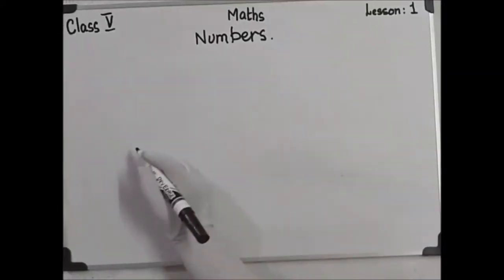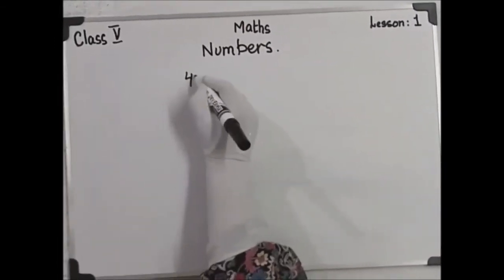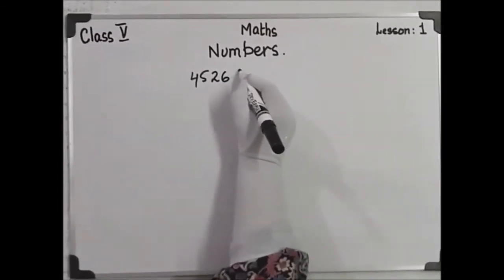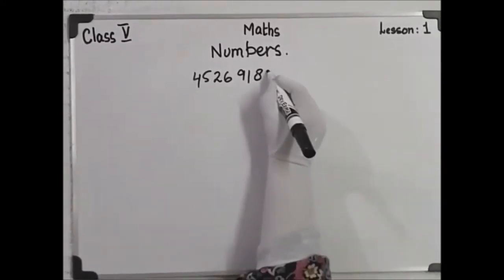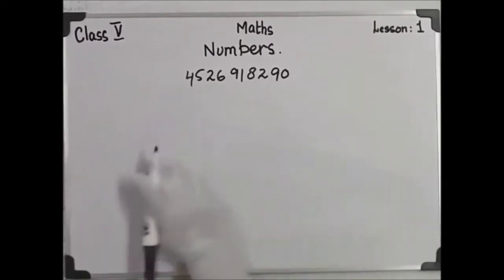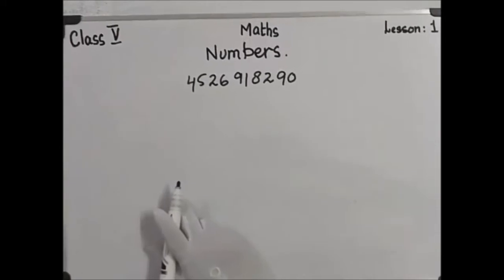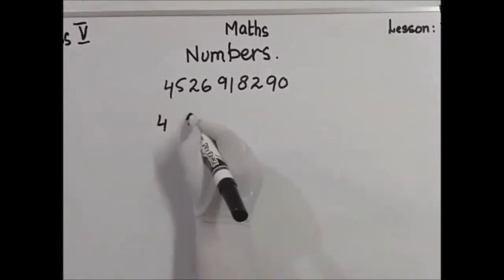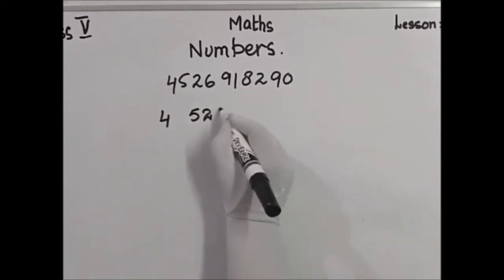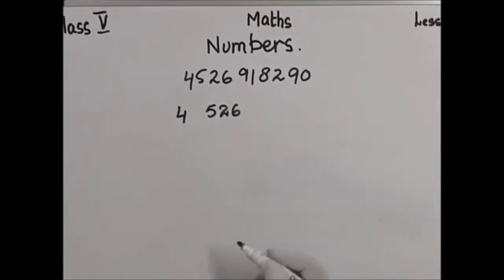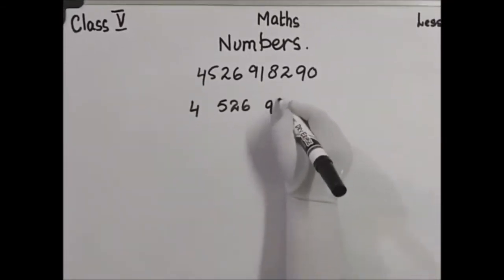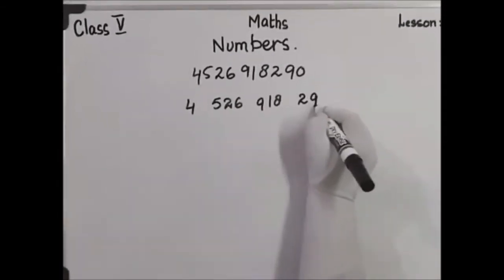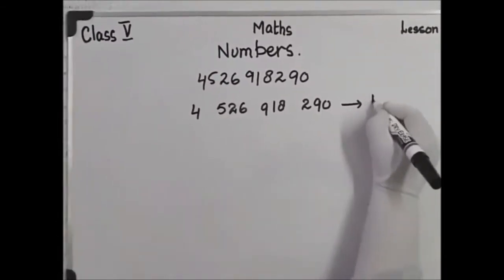Let's take the example 4, 5, 2, 6, 9, 1, 8, 2, 9, 0 — a 10-digit number. It is 4,552,600,000 plus 908,000 and 290 in the international system.